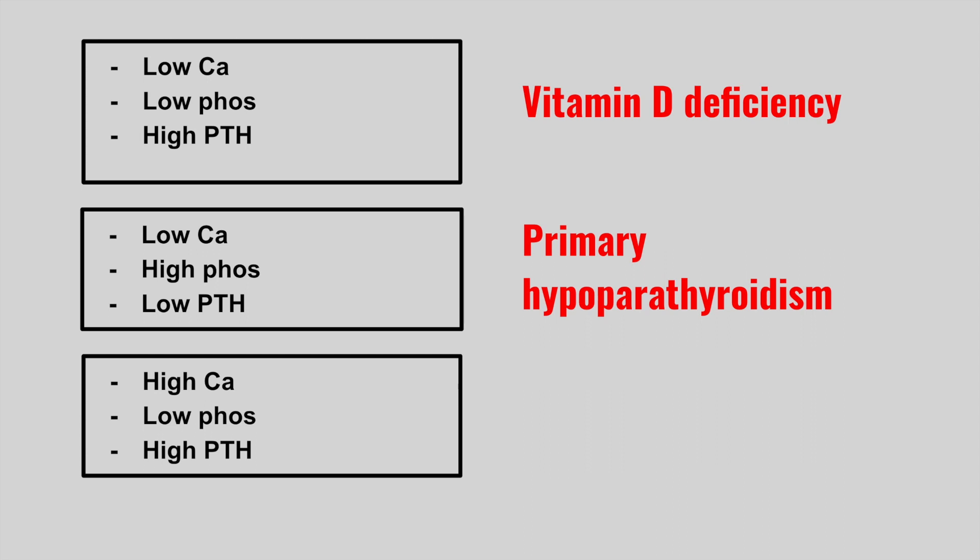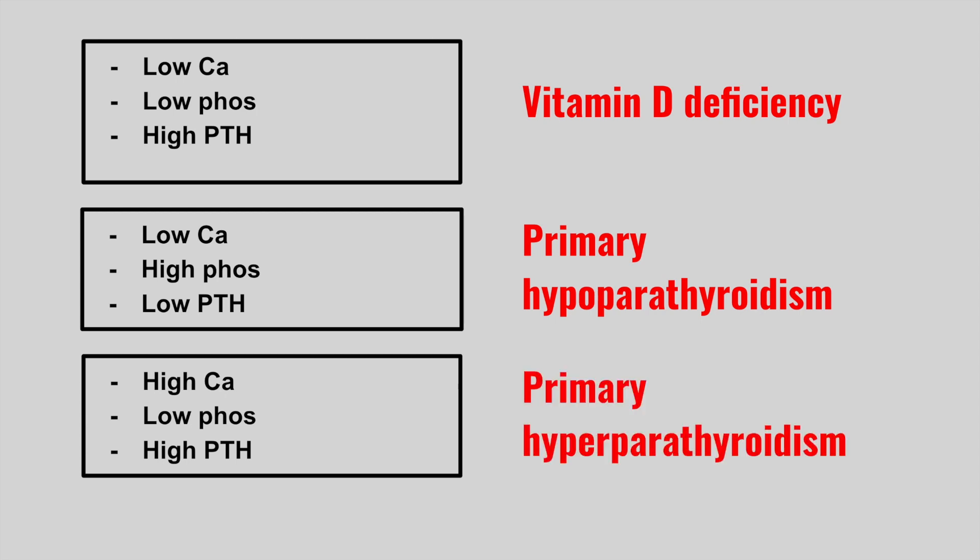The next patient has high calcium, low phosphorus, and a high PTH. This is primary hyperparathyroidism.